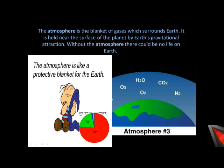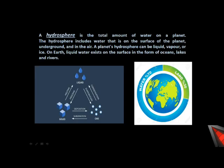Another unique feature is that the earth has an abundance of water. About 71 percent of the earth's surface is covered by oceans and seas. Therefore, the earth is sometimes called the watery planet or the blue planet. The layer of water on the surface of the earth is called the hydrosphere. Water is present in solid, liquid, or gaseous form in the atmosphere. In liquid form, it is present as oceans, lakes, and rivers — a very important resource for living beings.